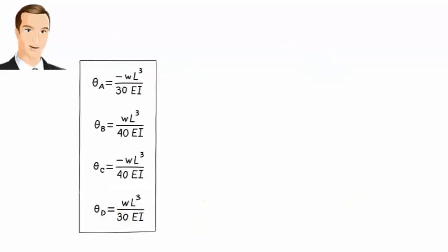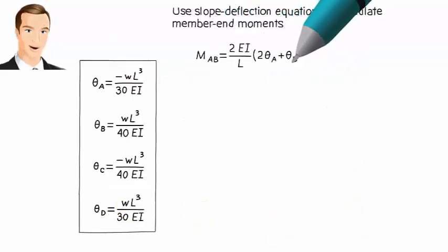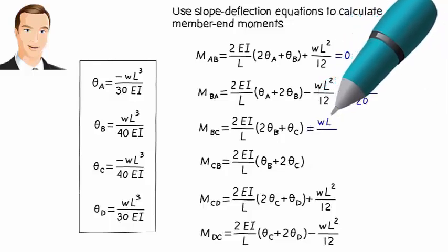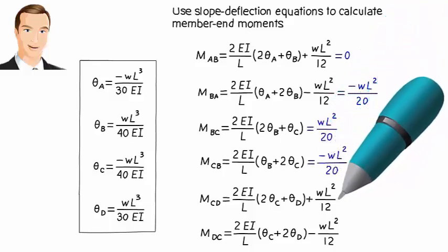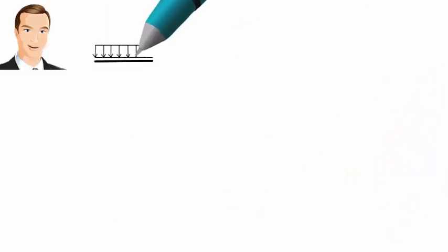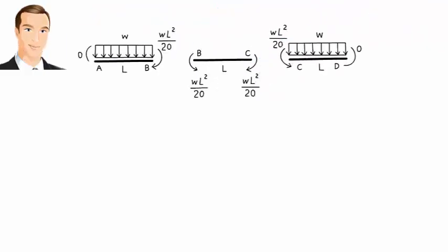Now that we know the joint rotations, we can substitute them into the slope-deflection equations to get the member end moments. The bending moment at the left end of segment AB is zero, while the moment at the right end is clockwise with magnitude wL²/20. For BC, we have a counterclockwise moment of wL²/20 at the left end and a clockwise moment of wL²/20 at the right end.